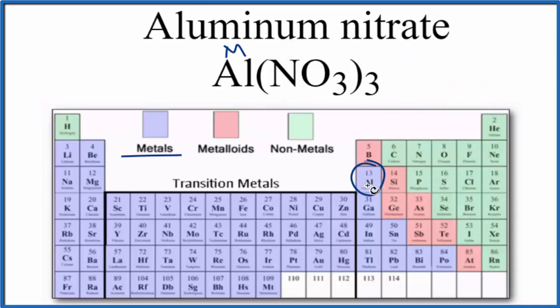So aluminum here, this is in group 13, sometimes called 3A, it has a 3+ ionic charge. Then the nitrate ion, we have three nitrate ions, but each one of those nitrate ions has a 1- charge.